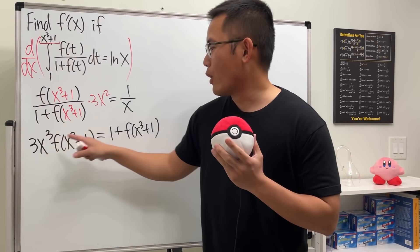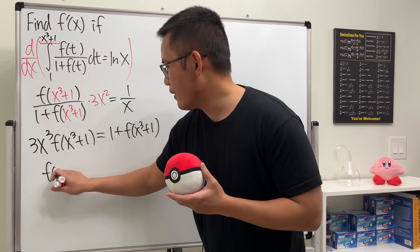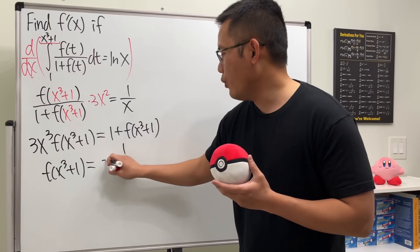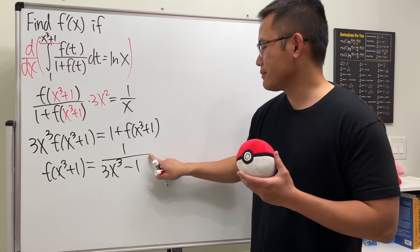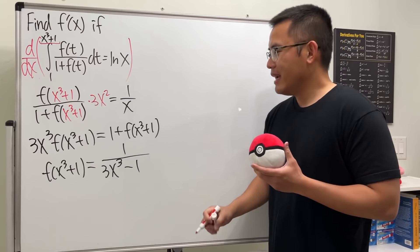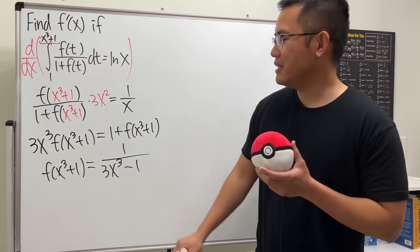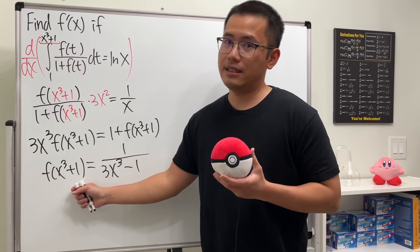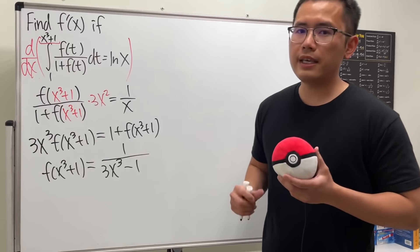So this is going to give us f(x^3 + 1) being equal to 1 over this, which is 3x^3, and then minus 1. So that's what we have. This is pretty good because we get the function by itself, but the problem is the input is not an x. It's x^3 + 1. So what do we do in this case?